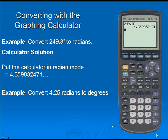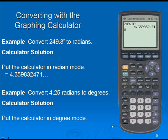Let's take a look at another example. Let's convert 4.25 radians to degrees. For the calculator solution, we should put the calculator in degree mode.